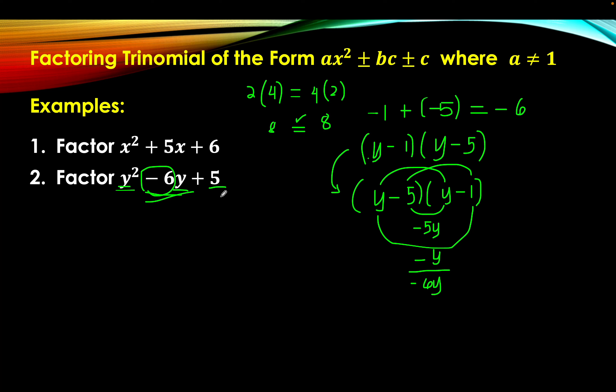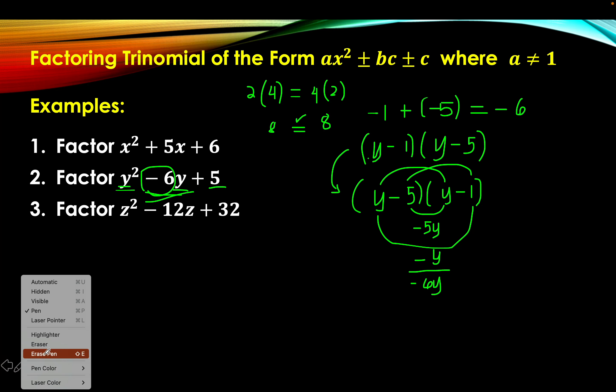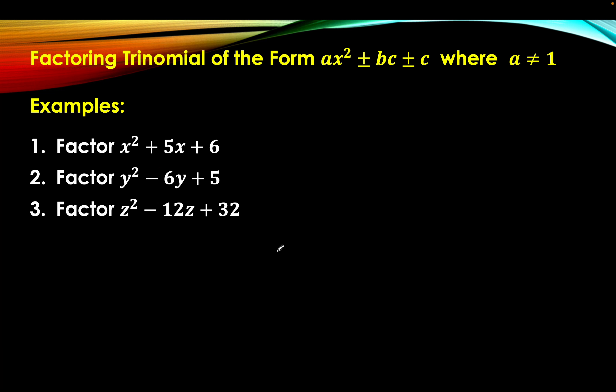Let's have another example. Example number 3. The last term is 32, so we are going to list all possible pairs of integers whose product is 32. We can use a factor tree to make it easier. So 32 can be broken down as 8 times 4, where 4 is 2 times 2, and 8 is 2 times 2 times 2.